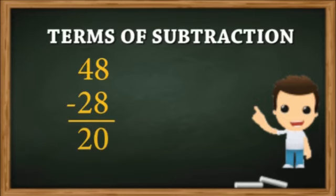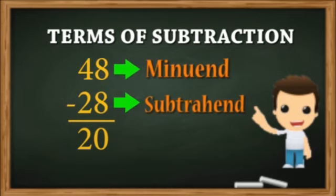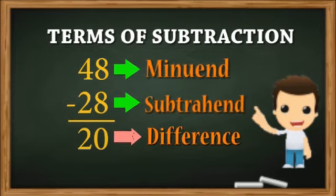Children, do you know the terms used for the numbers in subtraction? The number from which a number is subtracted is called the minuend. The number that is subtracted is called the subtrahend, and the answer we get after subtraction is called the difference.